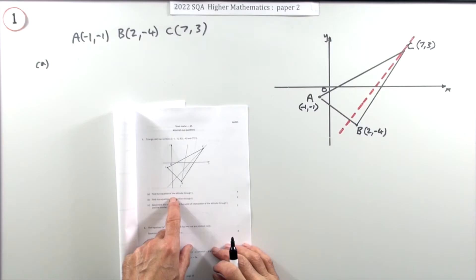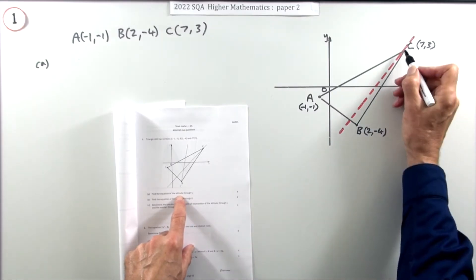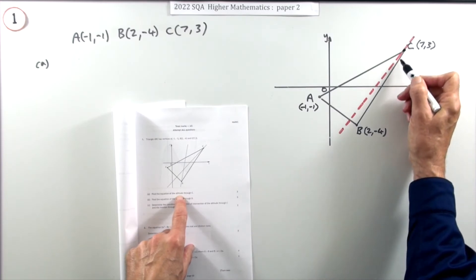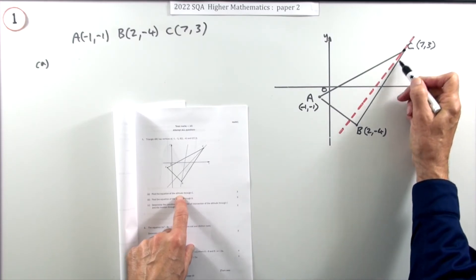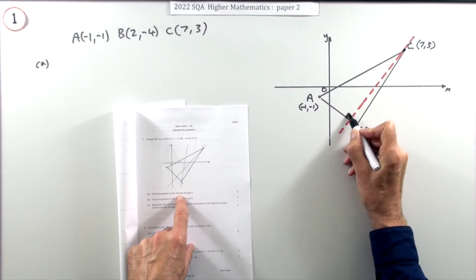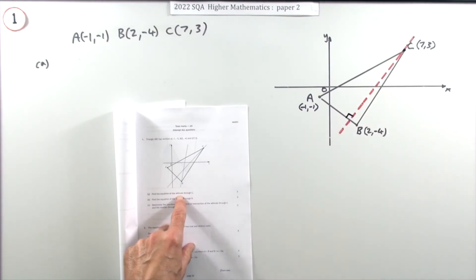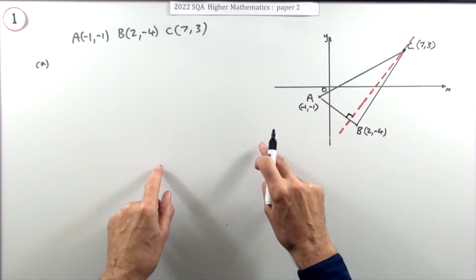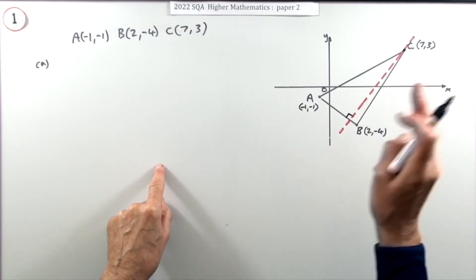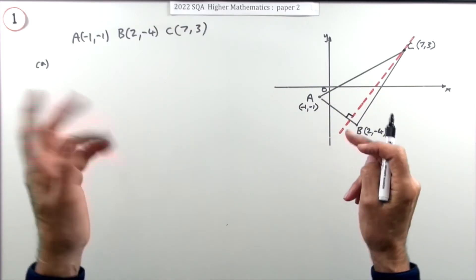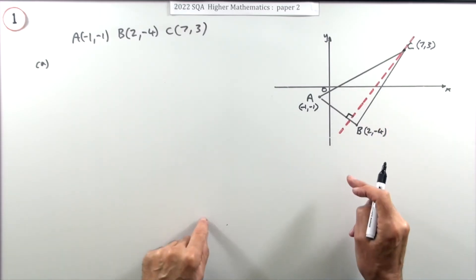Find the equation of the altitude through C. The altitude through C is a line that goes from C through the triangle to the opposite side and hits it at right angles. To find the equation of a line you need two things: a point on it and its gradient.